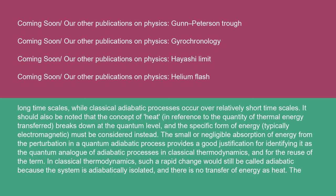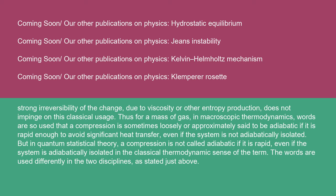Quantum adiabatic processes occur over relatively long time scales, while classical adiabatic processes occur over relatively short time scales. The small or negligible absorption of energy from the perturbation in a quantum adiabatic process provides a good justification for identifying it as the quantum analog of adiabatic processes in classical thermodynamics. In classical thermodynamics, a rapid change would still be called adiabatic because the system is adiabatically isolated and there is no transfer of energy as heat — strong irreversibility due to viscosity or other entropy production does not impinge on this classical usage. Thus, for a mass of gas in macroscopic thermodynamics, a compression is sometimes loosely said to be adiabatic if it is rapid enough to avoid significant heat transfer, but in quantum statistical theory a compression is not called adiabatic if it is rapid, even if the system is adiabatically isolated in the classical thermodynamic sense.